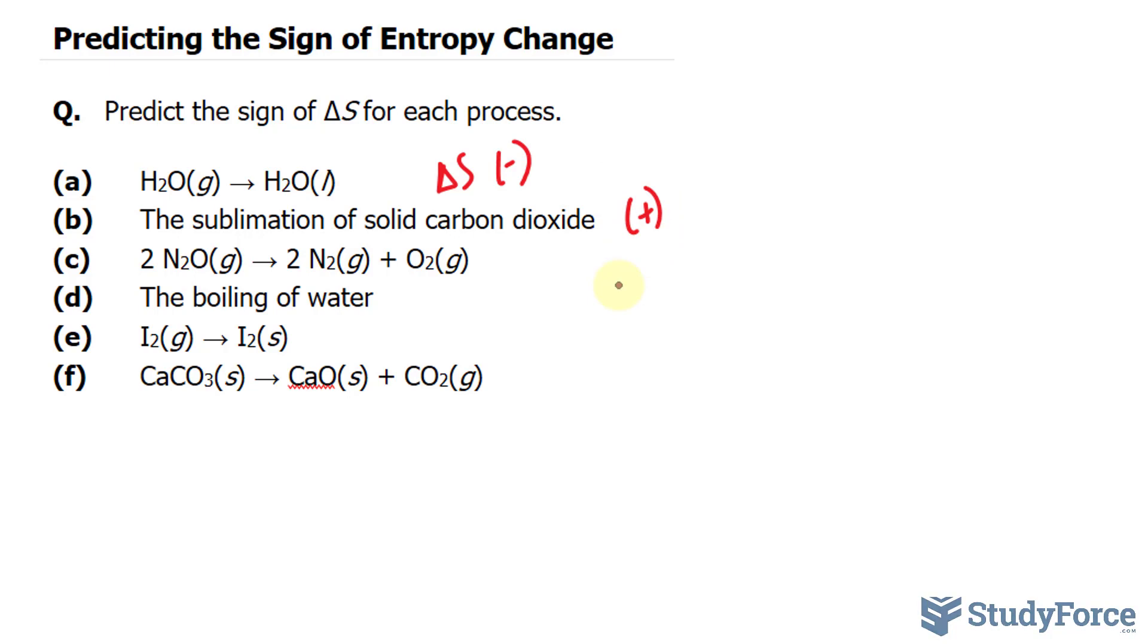In question C, we have a gas forming two separate gases. As you can tell, when you have a single molecule, it's more orderly than if you have two different types of gas molecules. So entropy here is increasing, and when entropy increases, this will be positive.